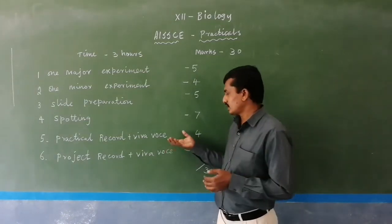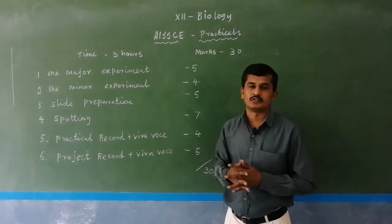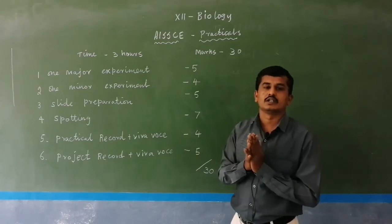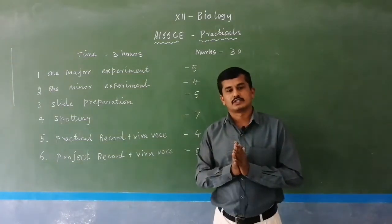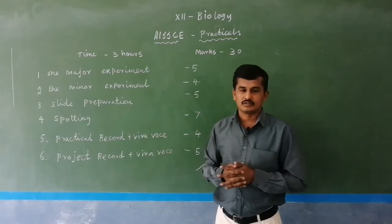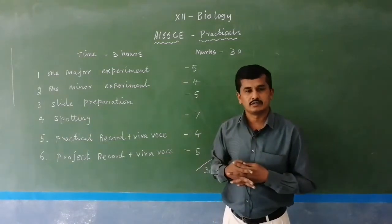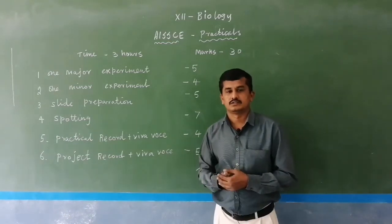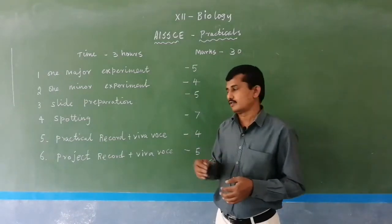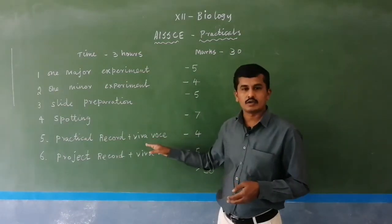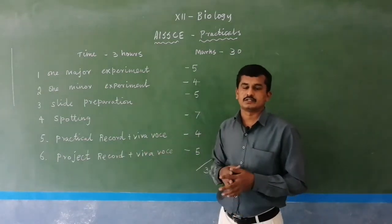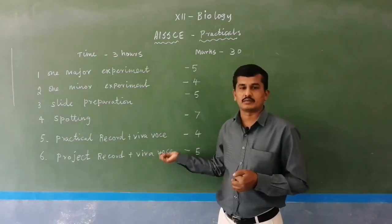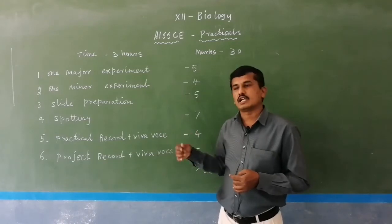If you do all this, you simply get all the marks — 4 plus 5. Practical record plus project record plus viva: 4 marks. Totally, the biology practical examination carries 30 marks in 3 hours, consisting of: one major experiment 5 marks, one minor experiment 4 marks, slide preparation 5 marks, spotting 7 marks, practical record plus viva 4 marks, and project record plus viva 5 marks. Total: 30 marks.